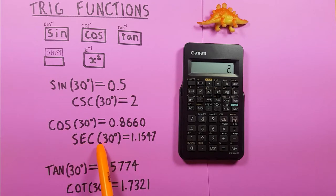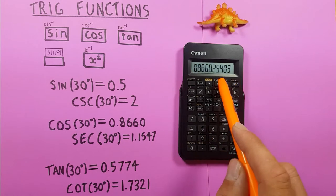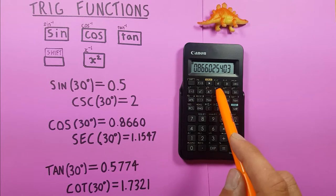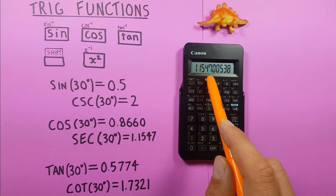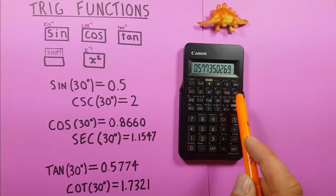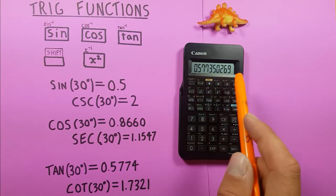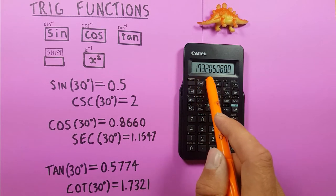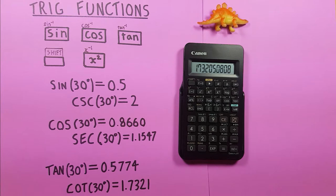For secant we use cosine so 30 cos, there's what we got, inverted with the shift x squared key gives us a secant of 1.1547. And for cotangent we use tan so we press 30 tan, there's our tangent, and then inverse it with the shift x squared again giving us 1.7321.